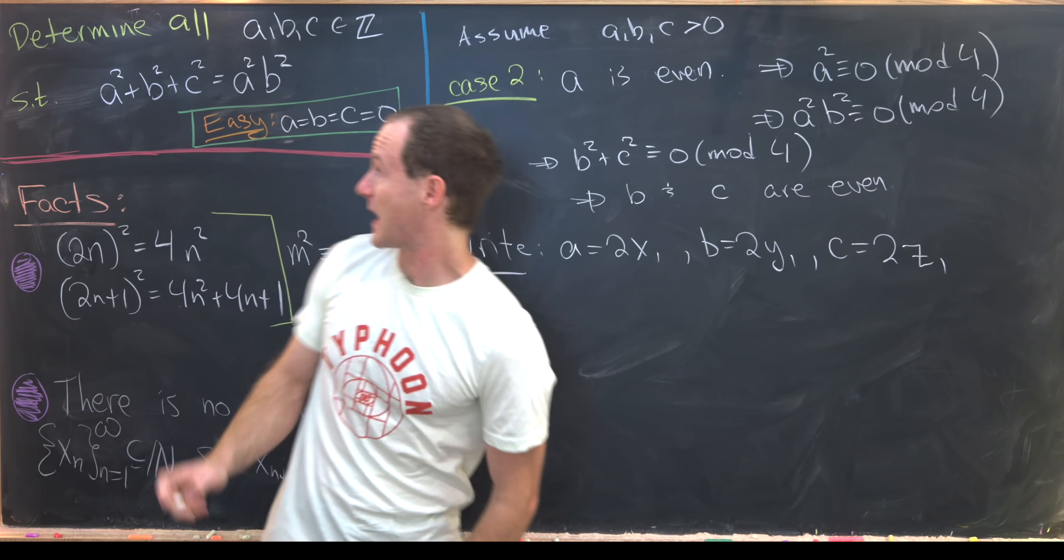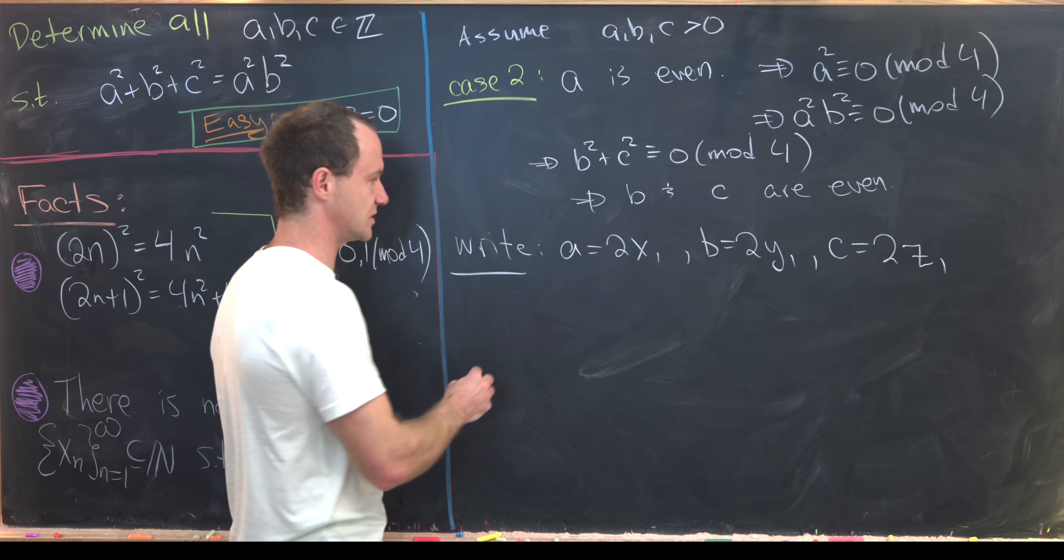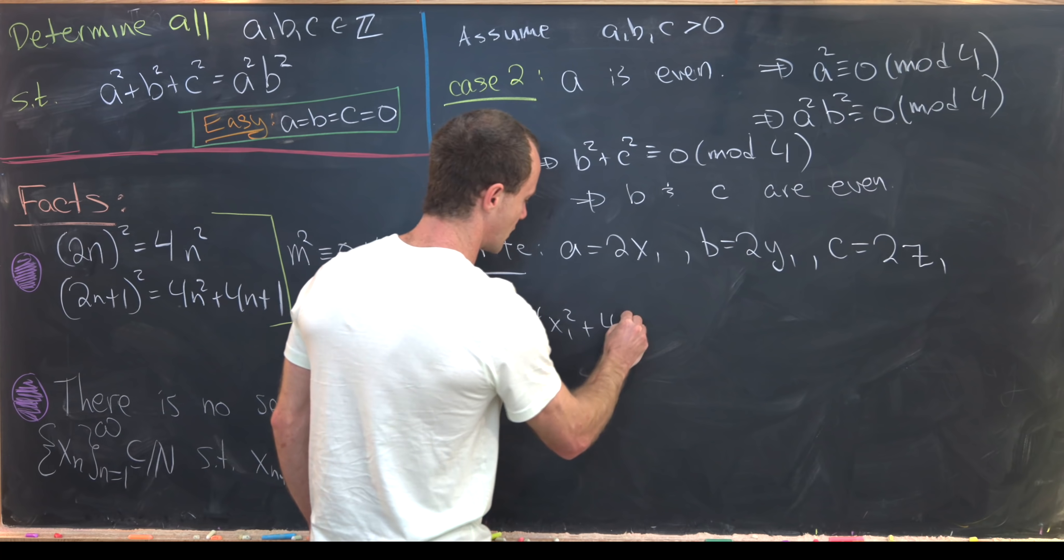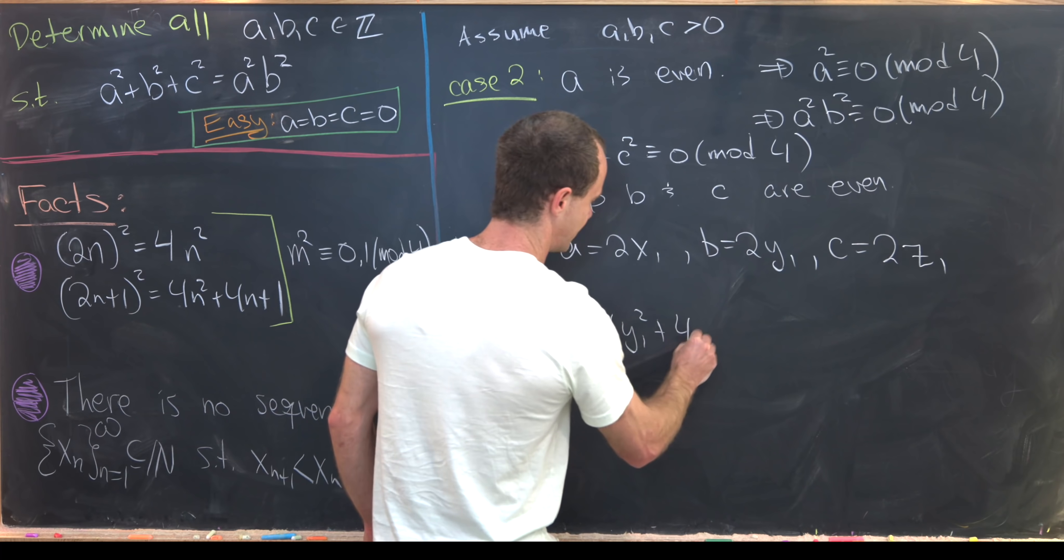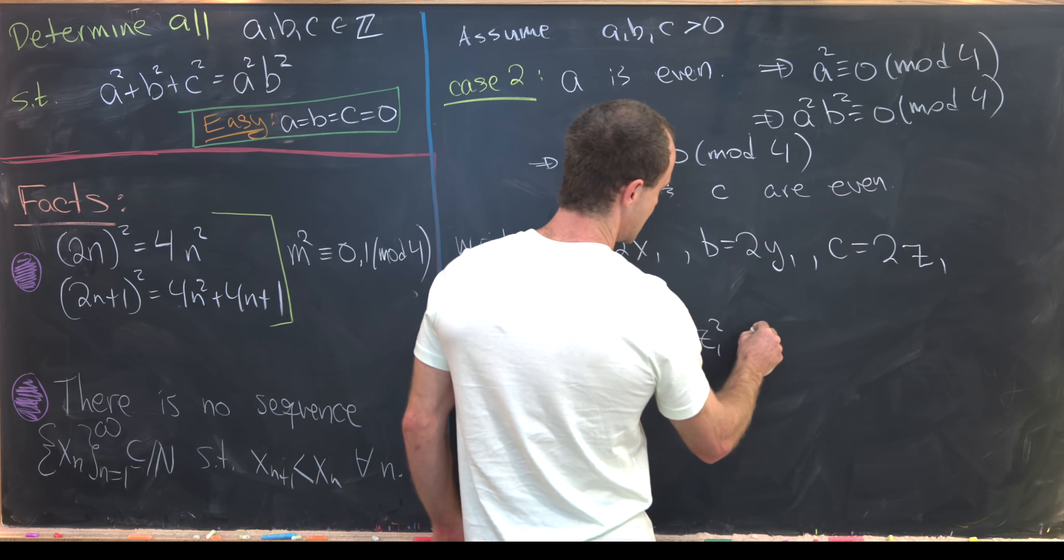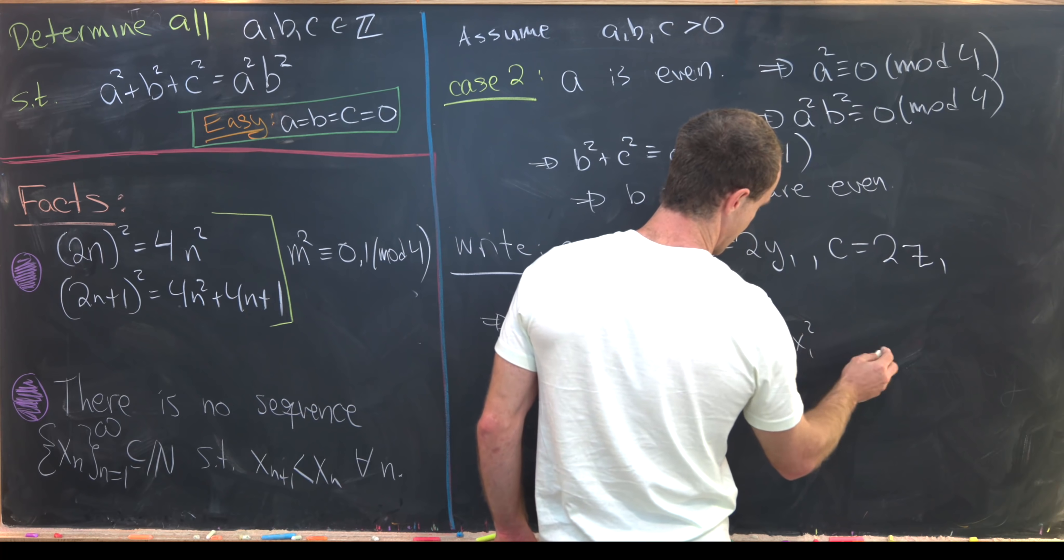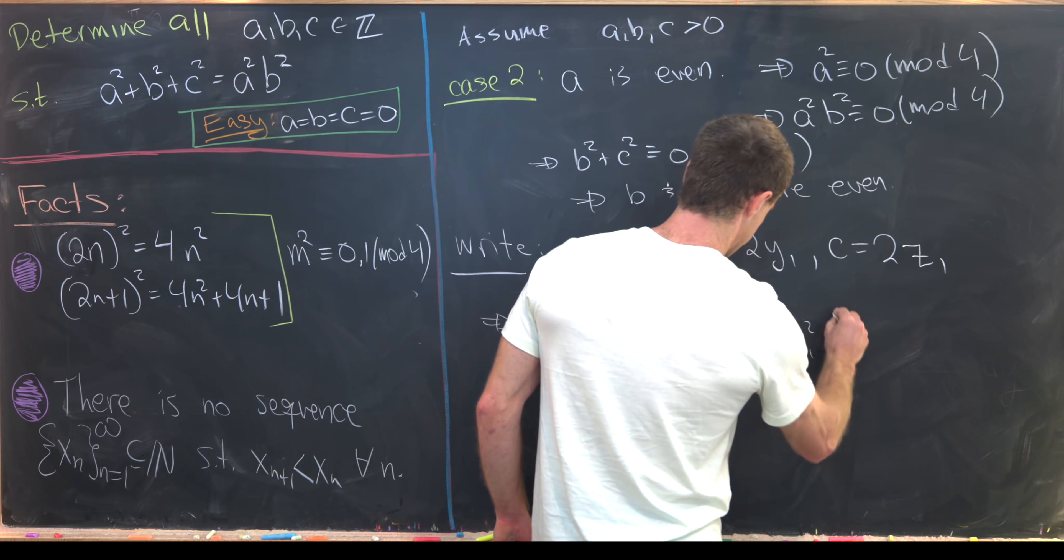And then we'll plug that back into our original equation. So notice that tells us that 4x₁² + 4y₁² + 4z₁² = 16x₁²y₁².